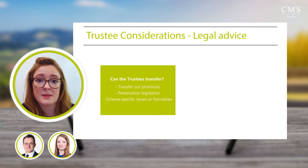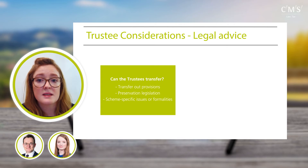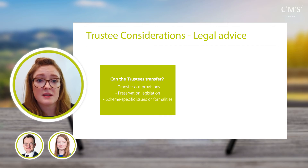Preservation legislation permits the transfer of members' benefits to another scheme without their consent, provided certain conditions are met. The legislation previously required an actuarial certificate in respect of any transfer, then was amended to allow a DC-to-DC transfer without a certificate but with independent advice. Since the introduction of the master trust authorisation regime, there is an alternative route: the legislative test is met if the transfer is to an authorised master trust. This doesn't mean trustees won't need advice — just that the independence requirements don't need to be met.